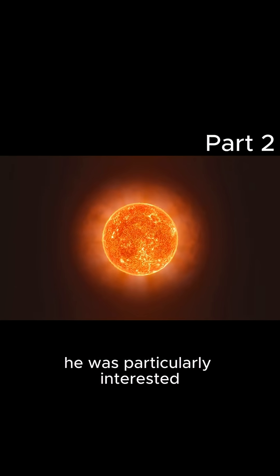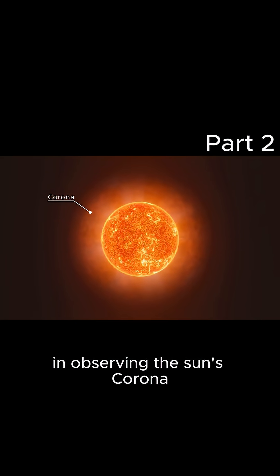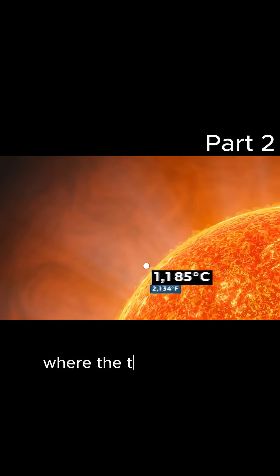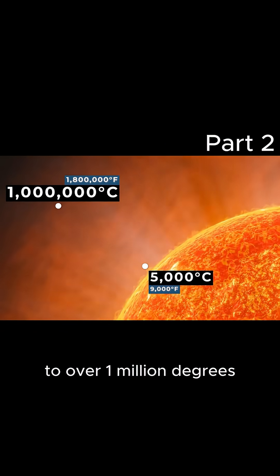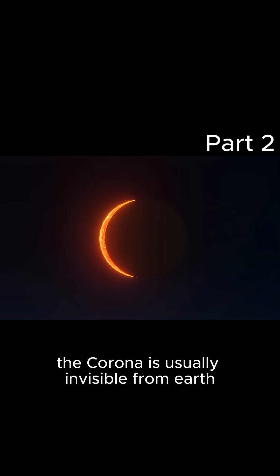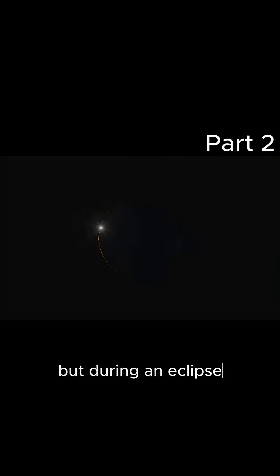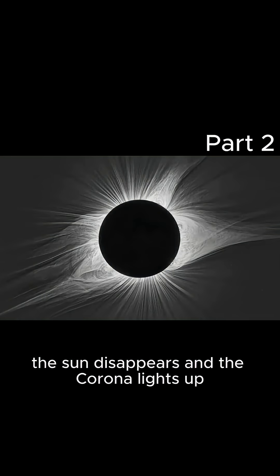He was particularly interested in observing the Sun's corona, the area of hot gas where the temperatures shoot from 5,000 degrees to over 1 million degrees. The corona is usually invisible from Earth, but during an eclipse, the Sun disappears and the corona lights up.